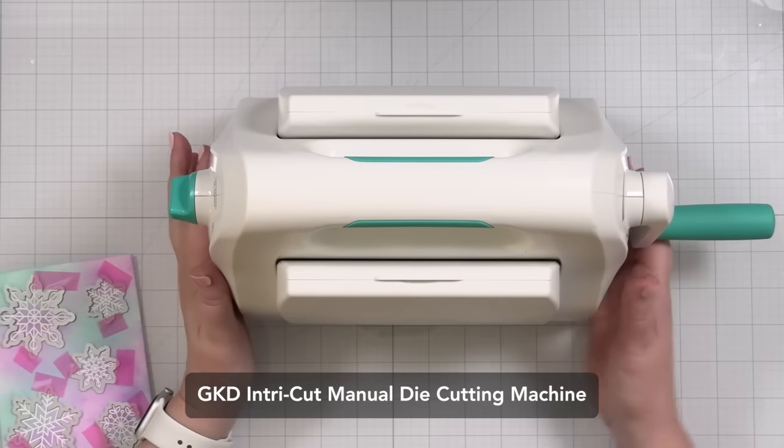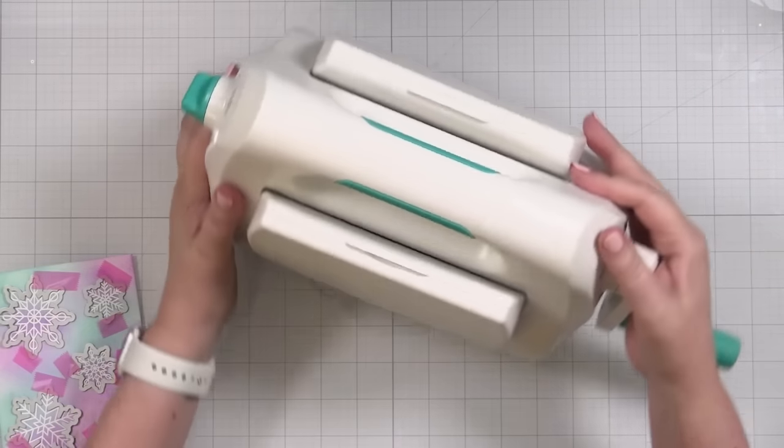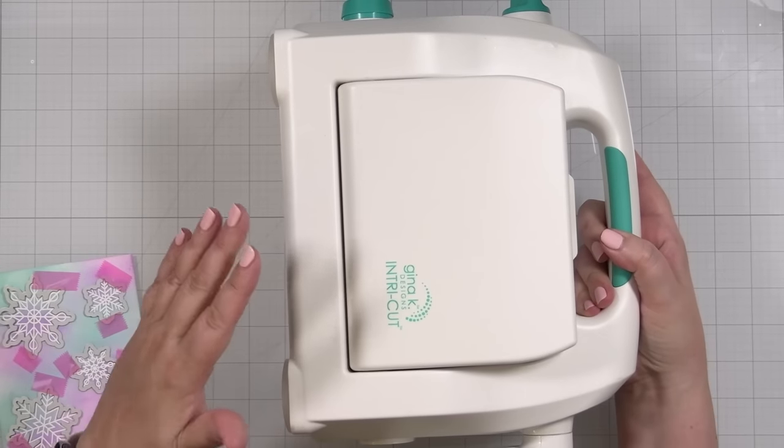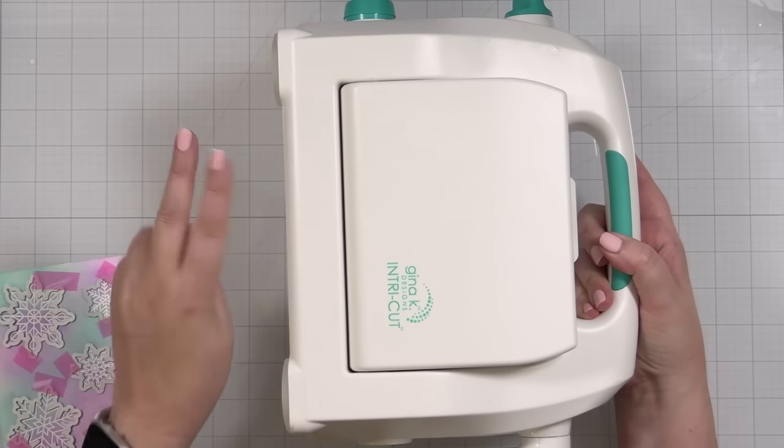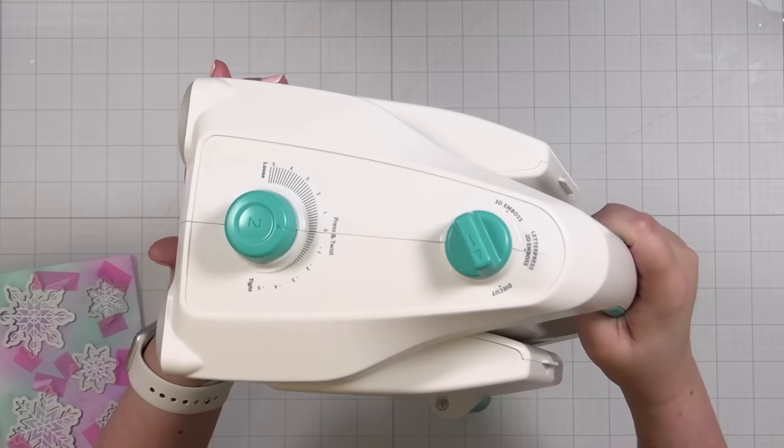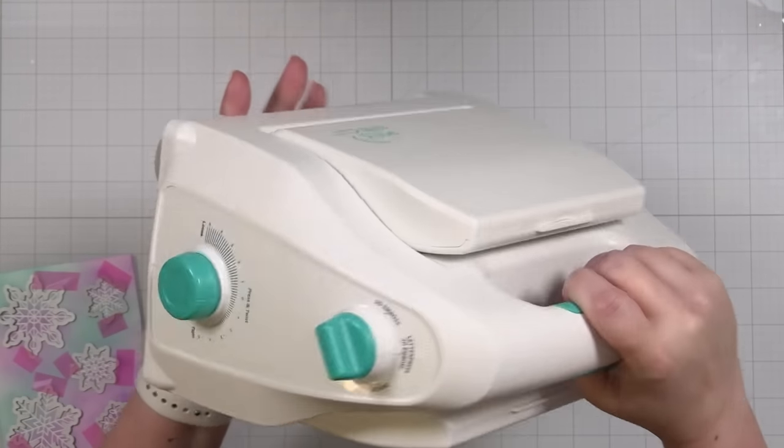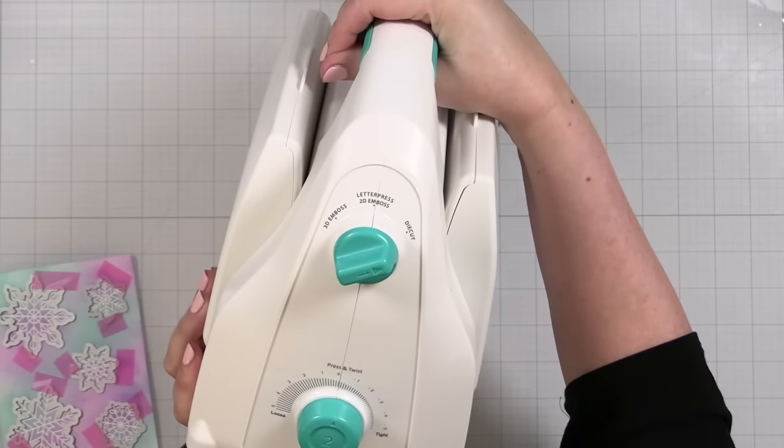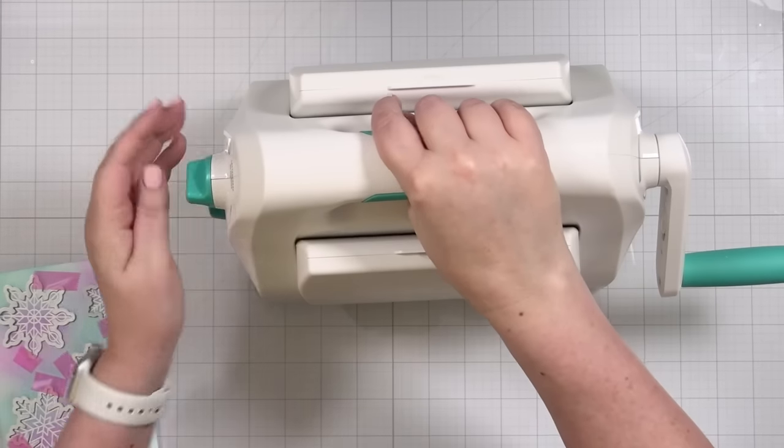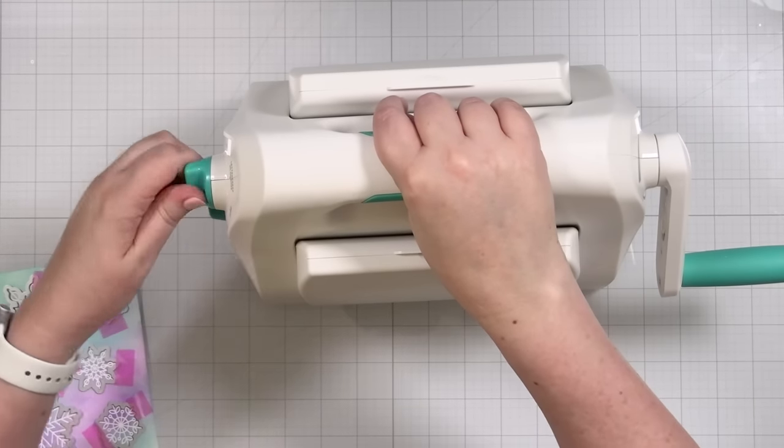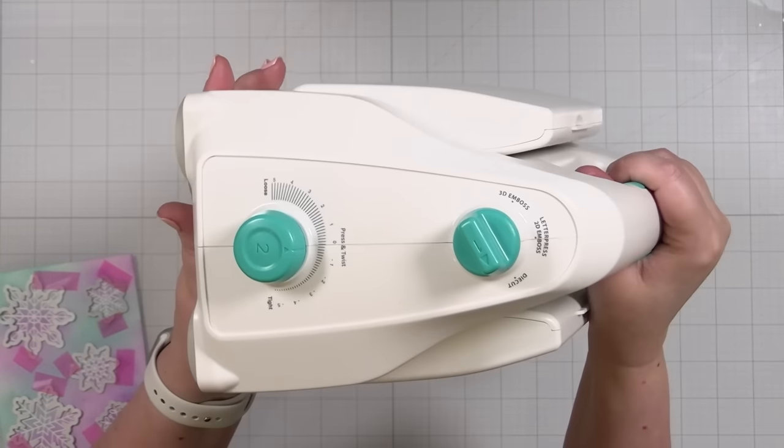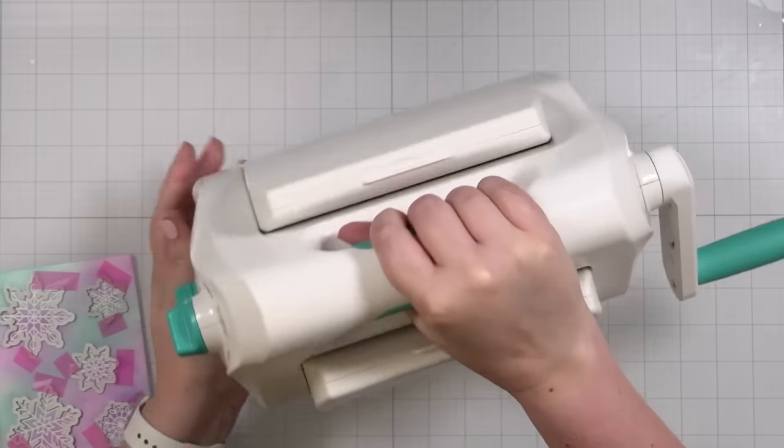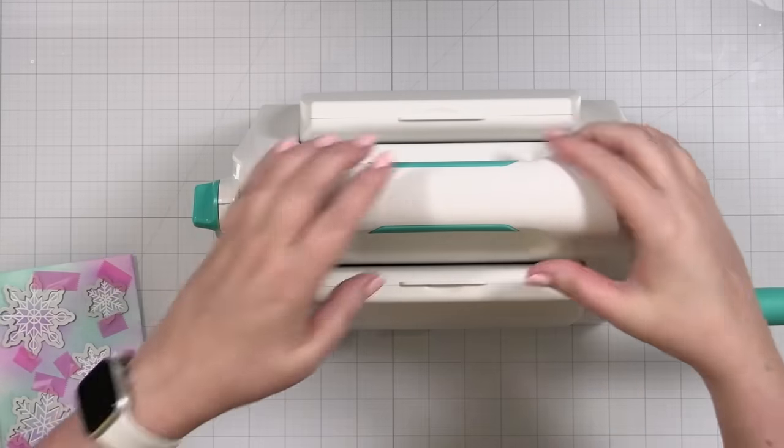Gina has just released an adjustable pressure machine. I have never used one of these types of machines. And the reason it's exciting is because you only need two plates. And what you do is you adjust via the pressure controls as needed. There are settings here and it says 3D emboss, letterpress emboss, and die cut. So what you do is you change based on what you need. And then there's an adjustment here, right here, the press and twist in order to change how much pressure is added.